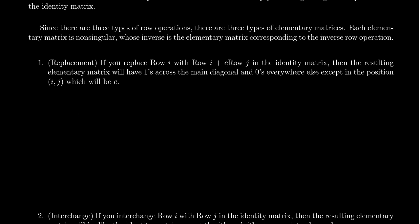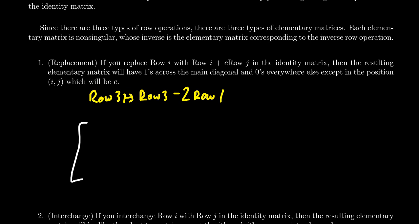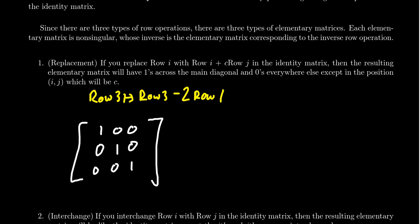Let's use a specific example. We're going to replace row 3 with row 3 minus 2 times row 1. If we take the standard 3 by 3 identity matrix — ones along the diagonal, zeros everywhere else — and we take row 3 and replace it with row 3 minus 2 times row 1, this would change the number in the 3,1 position.